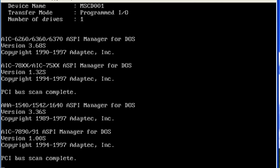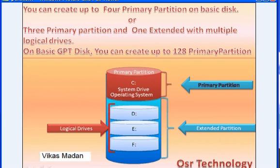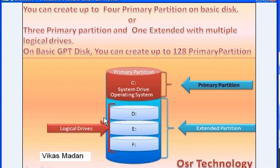As you know, we can create primary and extended partitions in a hard disk. According to this picture, I have one primary partition and one extended partition. The extended partition is further divided into logical drives. So let's see how we can create partitions using the Fdisk command.